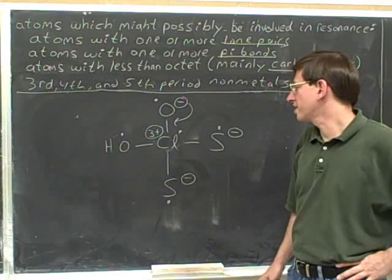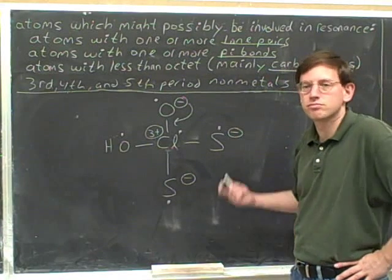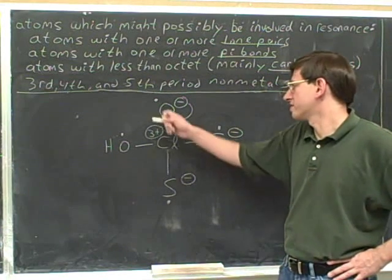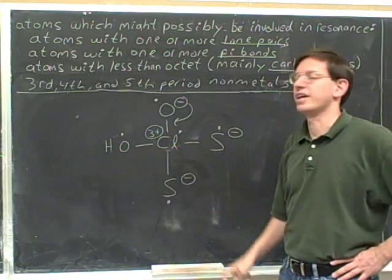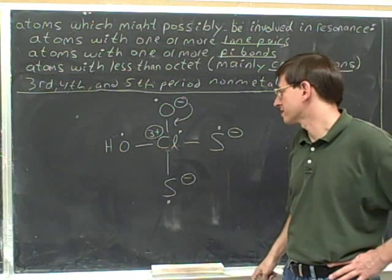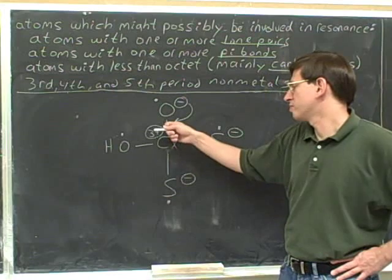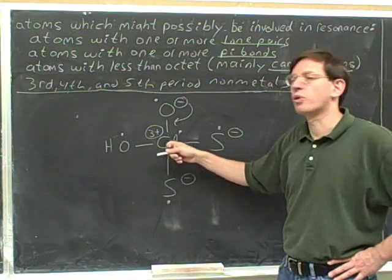So is this a legal electron-pushing arrow? Yeah, because it involves the oxygen that has a dot and this chlorine that has a dot. They're both good candidates for resonance. Now it's true that if we form a pi bond here, the chlorine will have more than an octet.